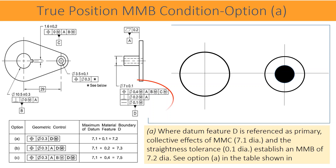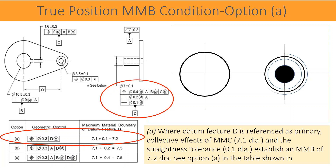The maximum material boundary of datum feature D where it is referenced as primary: the collective effects of MMC 7.1 diameter and the straightness tolerance 0.1 diameter establish an MMB maximum material boundary of 7.2 diameter. See option A in the table shown.